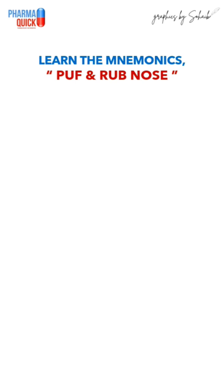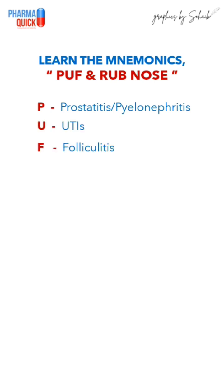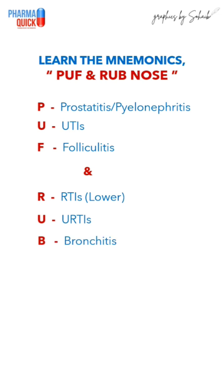P in 'PUFF' stands for prostatitis and pyelonephritis, U for urinary tract infections, F for folliculitis. R in 'RUB' stands for respiratory tract infections, lowercase U for upper respiratory tract infections, and B for bronchitis.